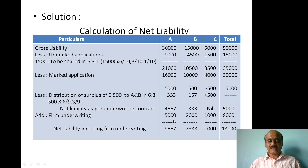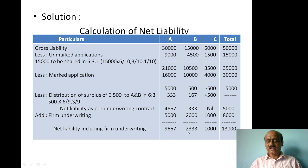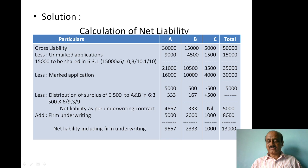Adding firm underwriting: A = 4,667 + 5,000 = 9,667 net liability including firm underwriting. B = 333 + 2,000 = 2,333. C = 0 + 1,000 = 1,000. Wait — B's adjusted figure is 333 shares plus firm underwriting 2,000. Total net liability = 13,000 shares.